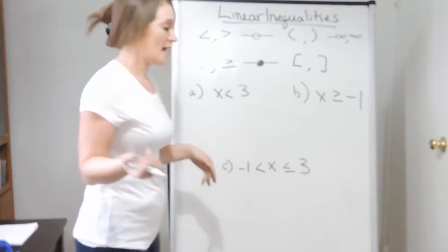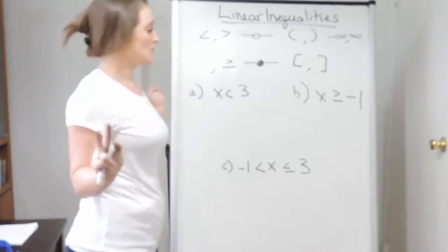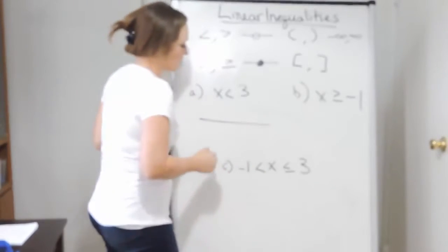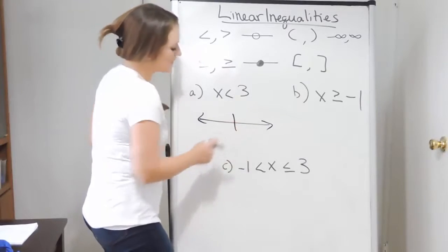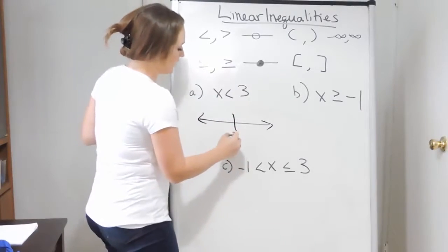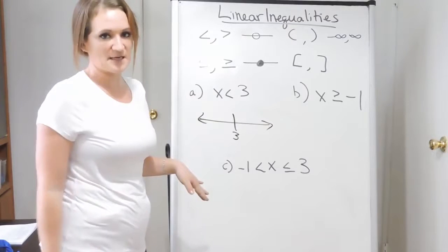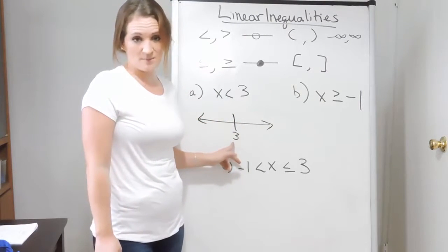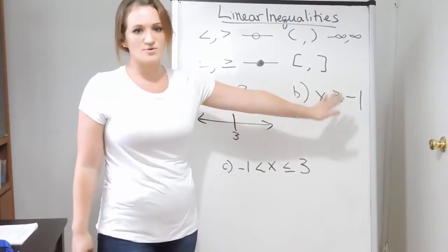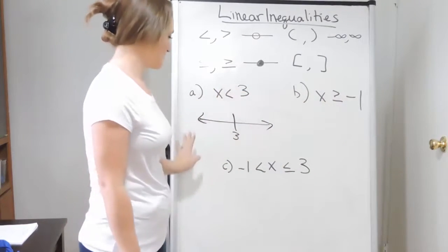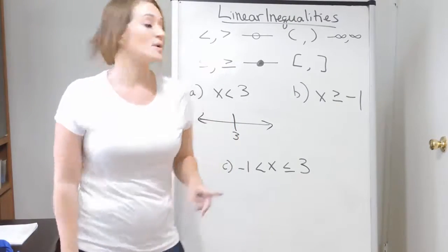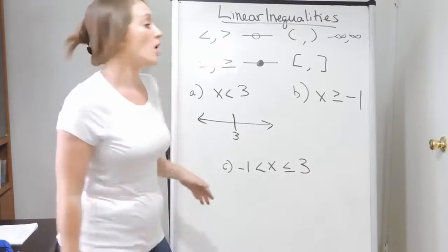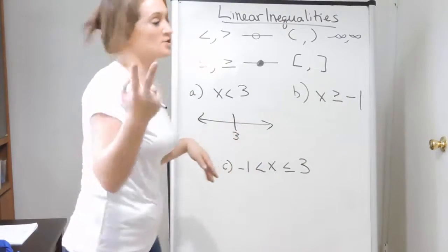There are two things you need to be concerned with when it comes to just graphing. When I'm asked to graph, I draw my number line. I'm typically just concerned with the numbers that the actual problem is asking me to graph — here it's talking about a three. Positive numbers are to the right, negative numbers are to the left. The two things you need to be concerned with are: what direction are you shading, and what kind of dot are you drawing?